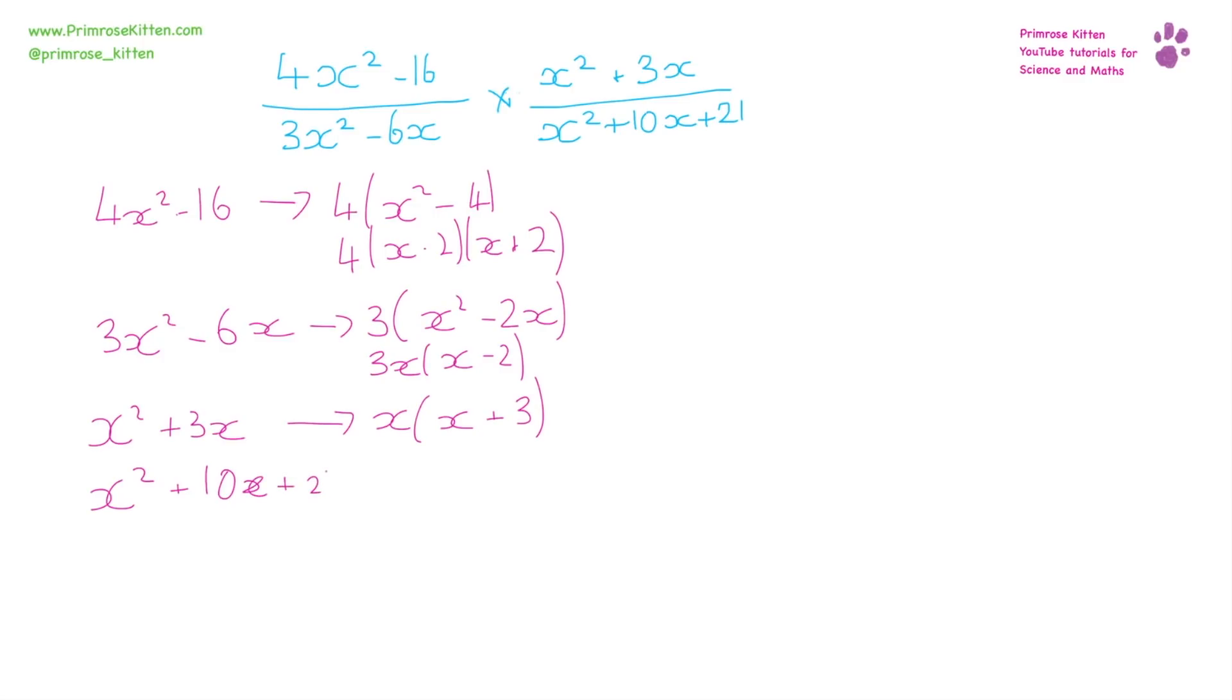That's going to go into two brackets with things that multiply to make 21: 1 and 21, 3 and 7... so (x + 3)(x + 7).